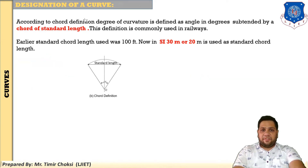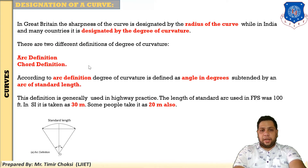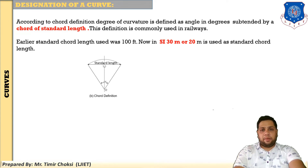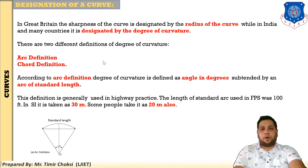Second, according to the chord definition, degree of curvature is defined as the angle in degrees subtended by a chord of standard length. The curve length — the distance between the point of tangency and the point of curvature — and the chord is the straight distance between the point of curvature and the point of tangency. Similarly, the chord distance is taken as 30 meters, and some use 20 meters. Generally, chord definition is used in railway construction and arc definition is used in highway construction. These are the designations of the curve.